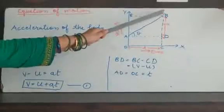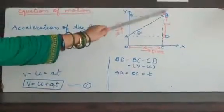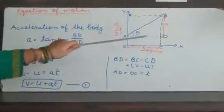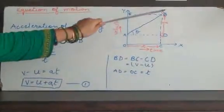Perpendicular is BD in triangle ABD. Perpendicular is BD and base is AD. So, BD upon AD. Now, the value of BD...